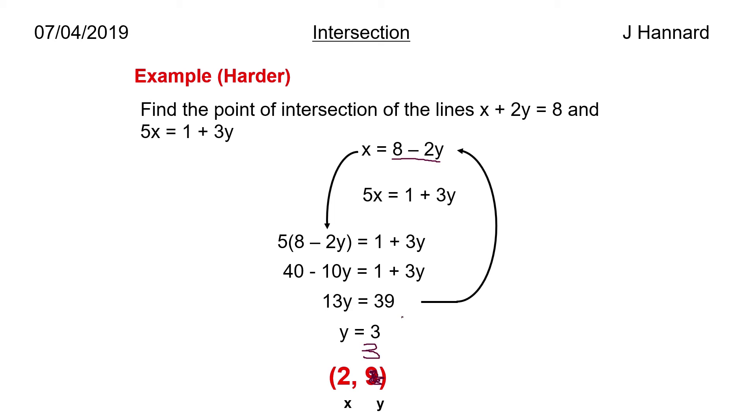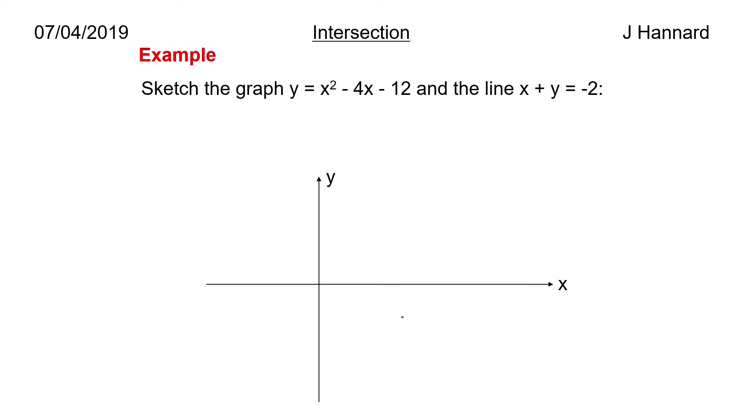This is probably the worst thing that can happen to you in an exam, though it's probably unlikely. I think more likely is the previous ones that we've done, but we'll study it anyway. Sketch the graph y equals x squared minus 4x minus 12 and the line x plus y equals minus 2. So x squared minus 4x minus 12 equals 0 factorizes to x minus 6 times x plus 2 equals 0. So that means our points of intersection on the x-axis are at 6 and minus 2. We know the y intercept is minus 12 because if x equals 0 then y is minus 12. So we then draw our lovely curve through it like that.